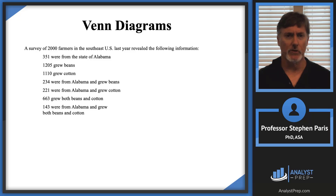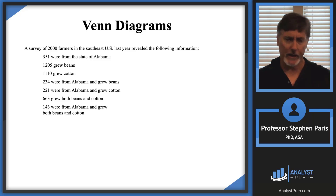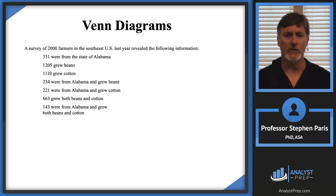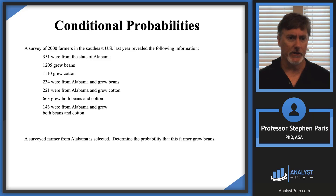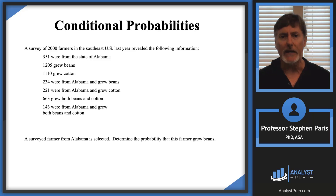Same example that we've been doing — started off with the same example anyway. We've got these 2,000 farmers all categorized in these different ways. You've seen this in previous videos. And our question here is that a surveyed farmer from Alabama is selected, and now we want to determine the probability that that farmer grew beans.